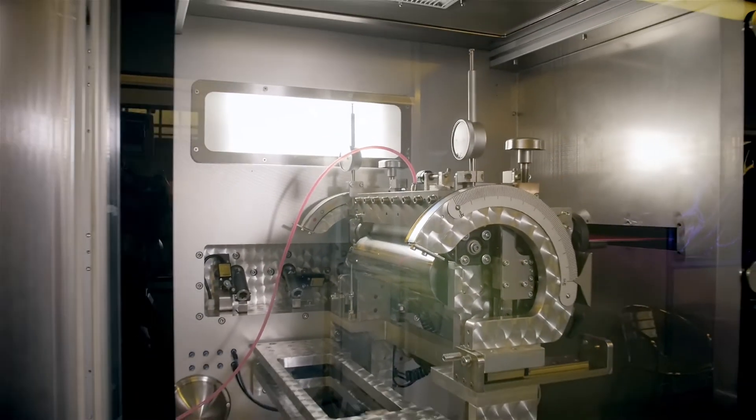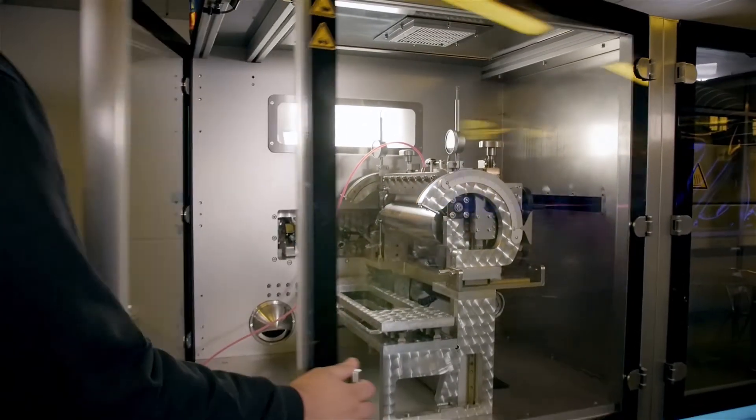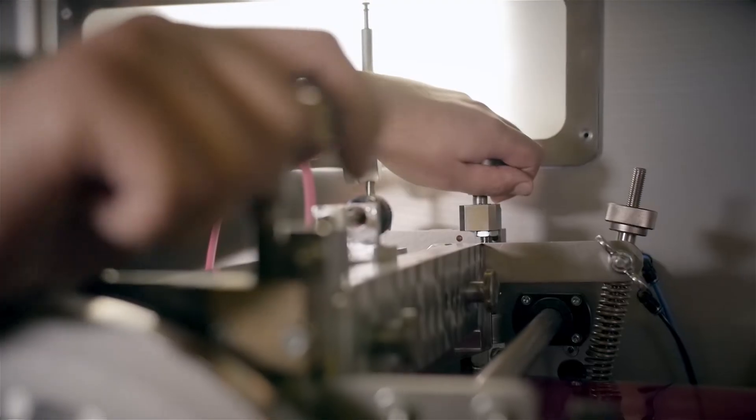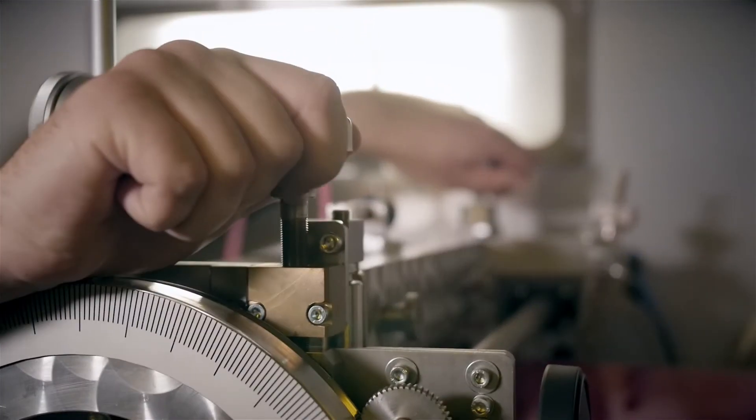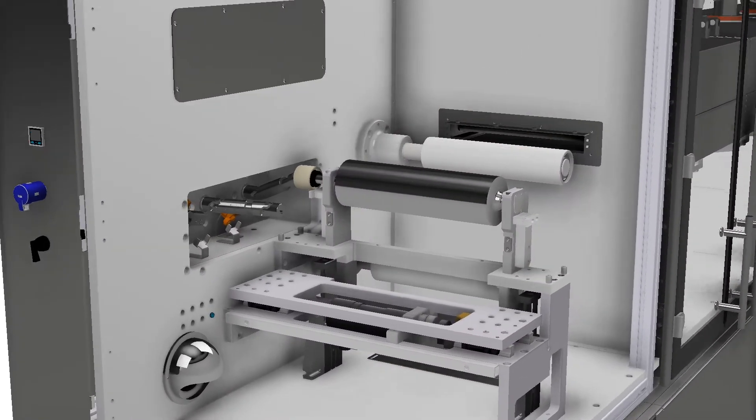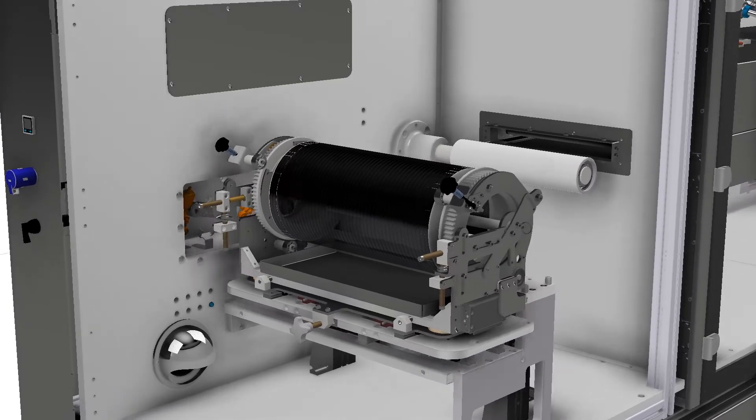The core of every roll-to-roll process can be found at the printing or coating station. At this modular position, it is possible to integrate coating and printing units, such as slot die or knife coating and printing units as rotary screen or inkjet printing.